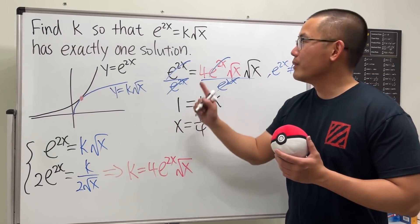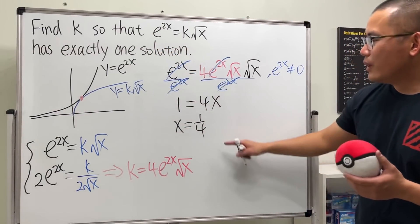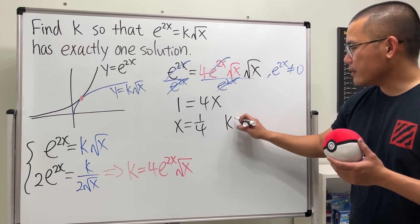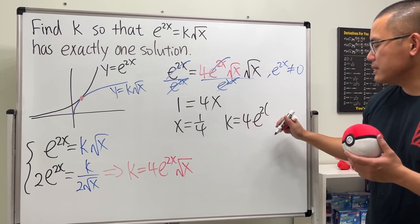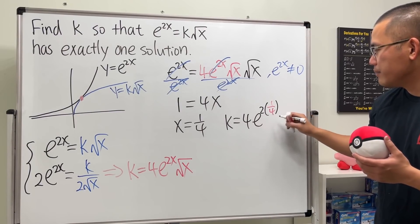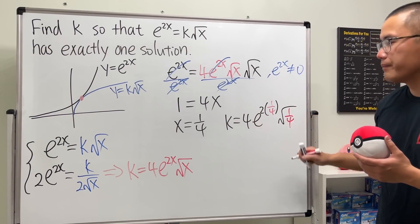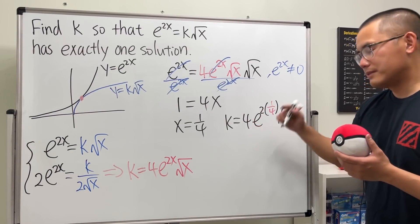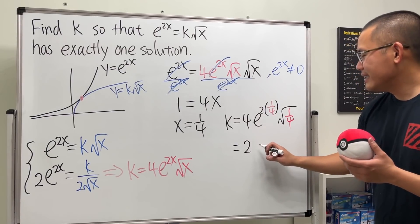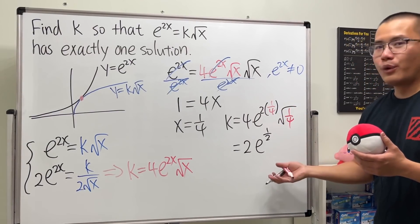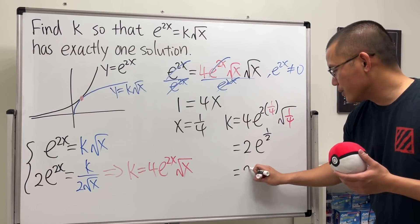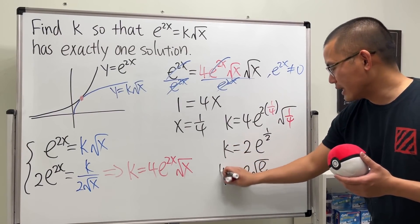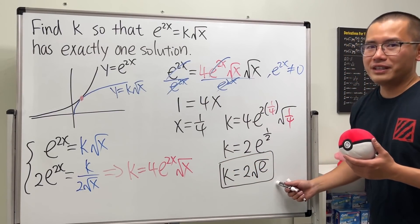But the question asks for k, not x. Substituting x = 1/4 into k = 4 e^(2x) times square root of x: k = 4 times e^(2 · 1/4) times square root of 1/4 = 4 times e^(1/2) times 1/2 = 2 times square root of e. So k = 2√e.